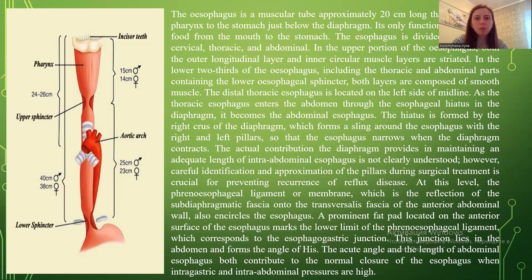The upper portion of the esophagus — both the outer longitudinal layer and inner circular muscle layer — is striated muscle. In the lower two thirds of the esophagus, including the thoracic and abdominal parts containing the lower esophageal sphincter, both layers are composed of smooth muscle. The distal thoracic esophagus is located on the left side of midline. The thoracic esophagus enters the abdomen through the esophageal hiatus in the diaphragm, becoming the abdominal esophagus. The hiatus is formed by the right crus of the diaphragm, which forms a sling around the esophagus with the right and left pillars, so that the esophagus narrows when the diaphragm contracts.